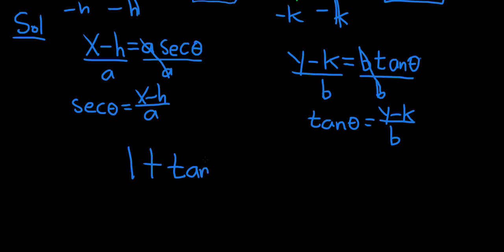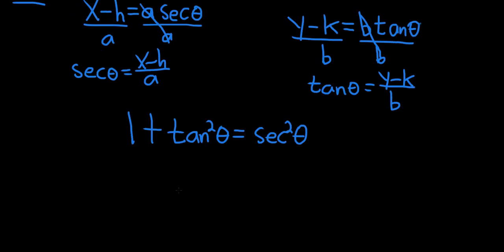Now we use the identity: 1 plus tan squared theta equals secant squared theta. You can rewrite this in a better way that will help us do the problem, and that would be to subtract tan squared from both sides. So let's write it like this: secant squared theta minus tan squared theta, moving it over to the right-hand side, equals one.